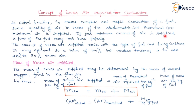If just the minimum amount of air is supplied, a part of the fuel may not burn properly. The amount of excess air supplied varies with the type of fuel and firing condition. It may approach a value of 100%, but modern tendency is to use 25-50% excess air. If we are using only the theoretical amount of air, there may not be proper combustion, and there may be leakage of air also. Because of all these reasons, we use some excess air than the stoichiometric air.